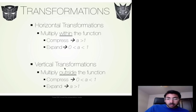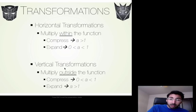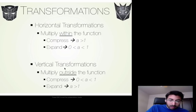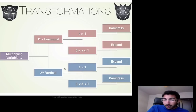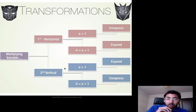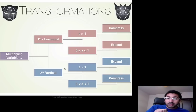Alright, transformations. We had two different types of transformations: horizontal transformations, where we multiplied within a function, and vertical transformations, where we multiplied outside of the function. The rules stay the same now that we're dealing with logs — nothing changes. So we had this chart; you guys should have copied it down already. If you haven't, you need to copy it down in your notes. This is a quick flow chart to show us what we need to do. Whenever we notice we're going to be multiplying our function, we look at whether it's the first thing we do to our variable, or something we do after.